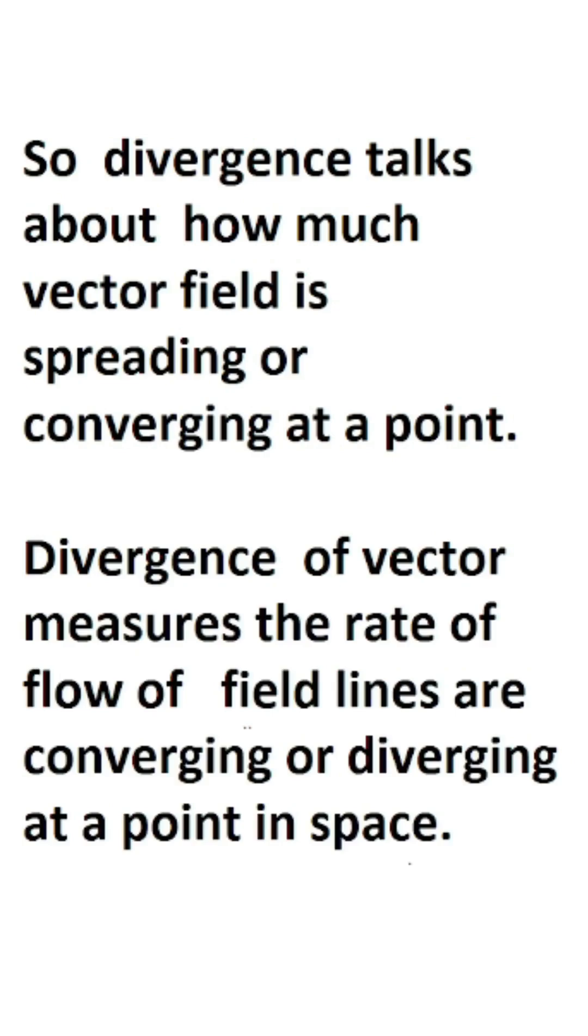Divergence of a vector measures the rate of flow of field lines that are converging or diverging at a point in space.